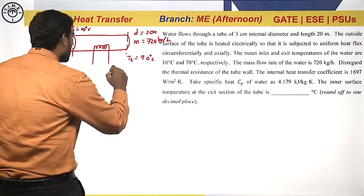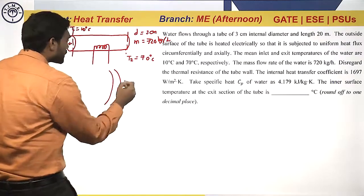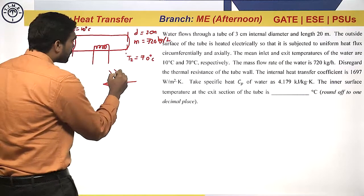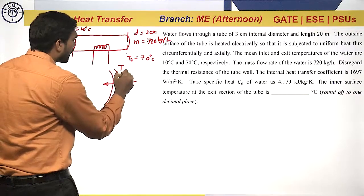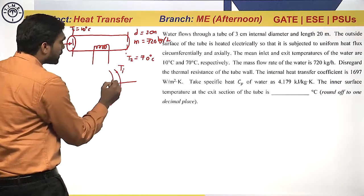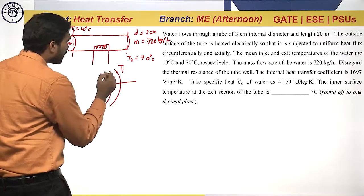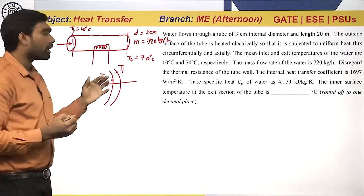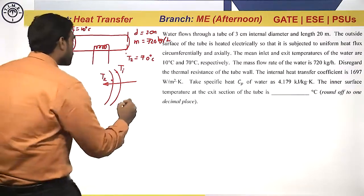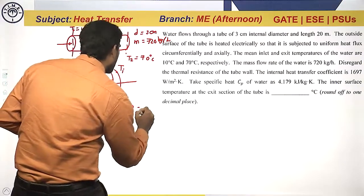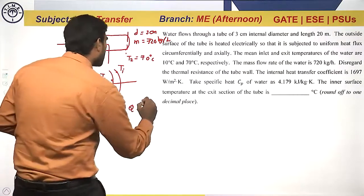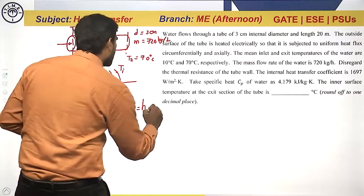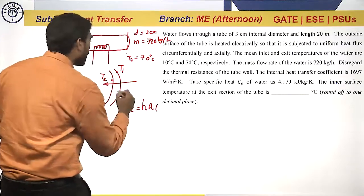Considering the exit section: since this pipe is subjected to heat transfer from outside, we assume the surface temperature at the exit is Ti, and the water temperature at this point is T2. Along the tube, the rate of heat transfer is constant. So we can write the heat transfer equation using convection: Q equals H·A into (Ti minus T2).